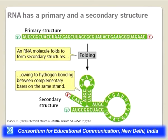RNA has both a primary and a secondary structure. The primary structure is intrinsic in its sequence, but since RNA is single-stranded, it can also fold to form secondary structures through hydrogen bonding between complementary bases on the same strand. RNA molecules have very specialized secondary structures that are important for their role in converting DNA to protein.